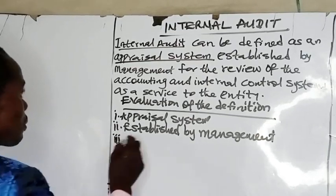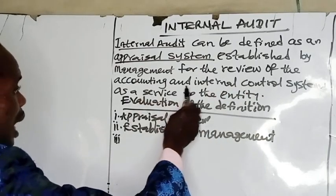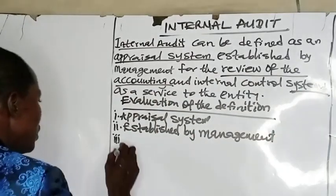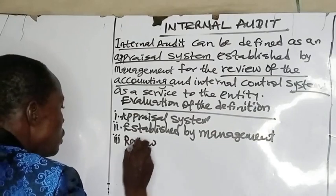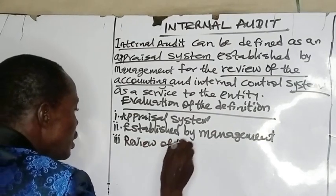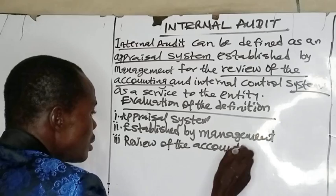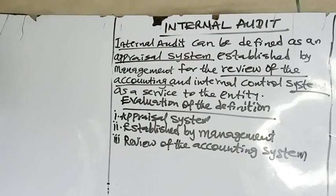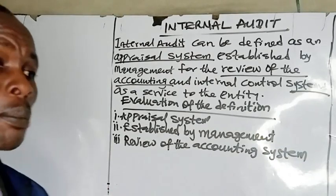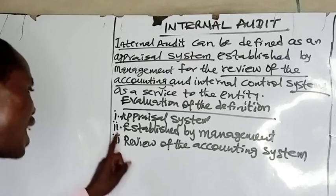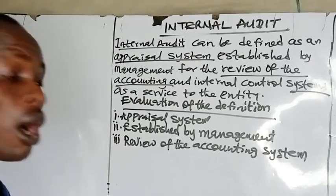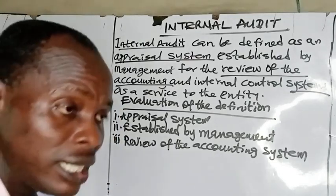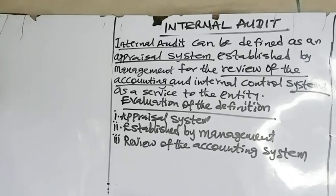Number three key concept is the review of the accounting system. This ensures that the accounting system of the organization is properly processed — that is, it ensures the correctness of the accounting information.